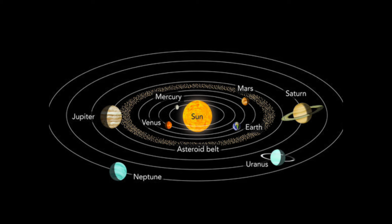The sun, which is a star, and the planets that revolve around it, are together called the solar system. The sun is the most important star.